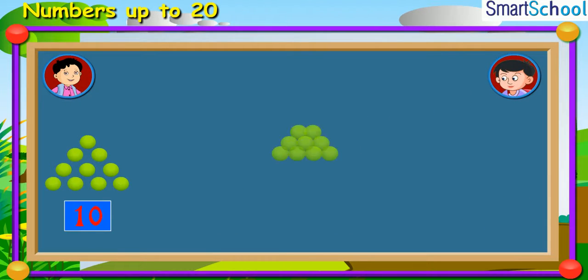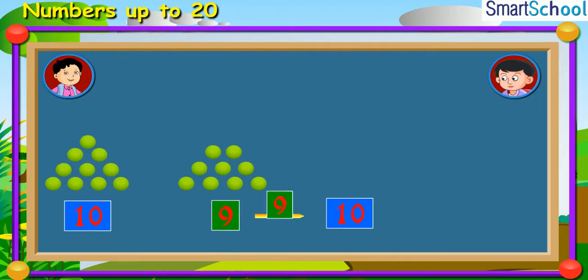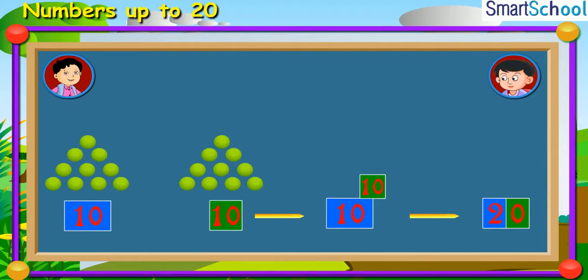If Manoj gives him 9 balls, he has 1, 9, that is, 19 balls. If Manoj gives him 10 balls, he has 2, 0, that is, 20 balls.